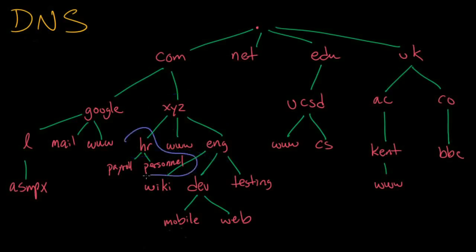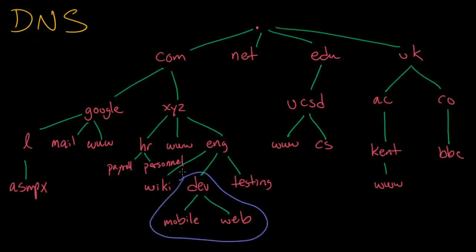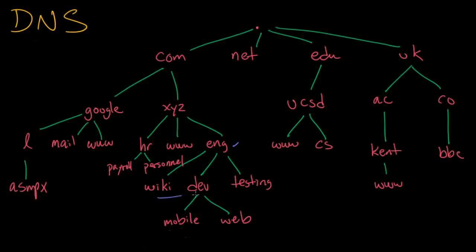Then there's the HR zone, the engineering zone, and the development zone within engineering. Each of the examples I've shown you so far knows about itself and the items right below it — in other words, just two levels deep. That's not always the case.